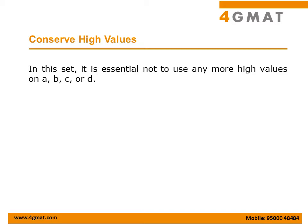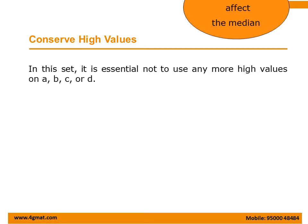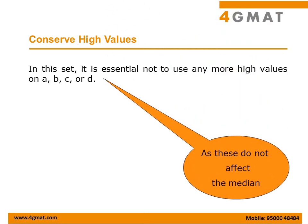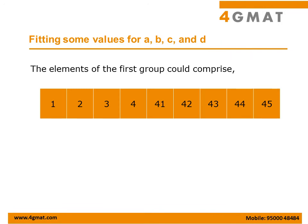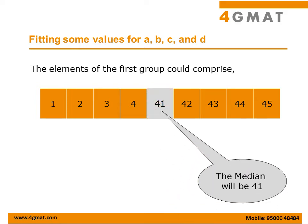To maximize the medians in each group, we should not use any more high values on the first 4 numbers A, B, C, D, because these do not influence the process of maximizing the median of any group. So let's give A, B, C, D the smallest possible values: 1, 2, 3, and 4. The first group therefore looks like: 1, 2, 3, 4, 41, 42, 43, 44, 45. The median of this group is 41.